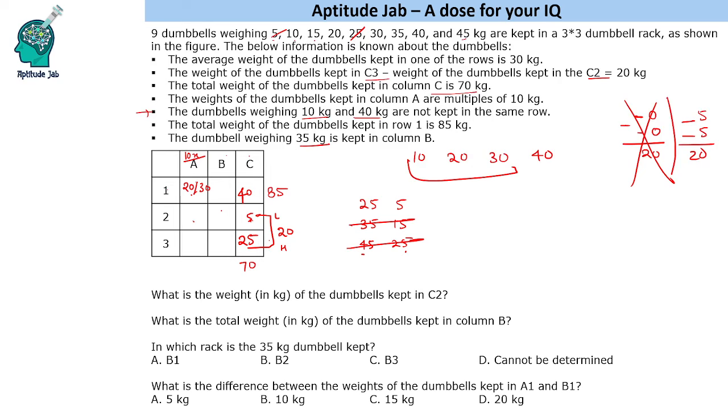Now if you put 20 here - 20, 40, 60 - it should be 25 to make it 85 but 25 is already used here. So we cannot have 25.